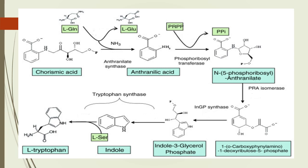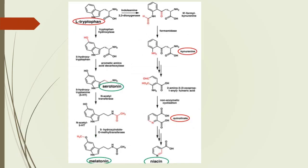Anthranilic acid is further converted into N-(5-phosphoribosyl)-anthranilate with the help of phosphoribosyl transferase. This is then converted into 1-(ortho-carboxyphenylamino)-1-deoxyribulose-5-phosphate with the help of PRA isomerase. This intermediate is further converted into indole-3-glycerol phosphate with the help of synthase. Indole-3-glycerol phosphate is then converted into indole with the help of tryptophan synthase, and serine is added to indole to form L-tryptophan.